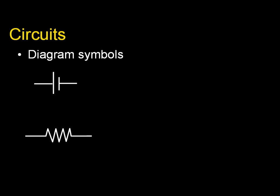Next, we have the symbol for a resistor, something that disrupts the flow of current. The other symbol here is a lamp or light bulb.